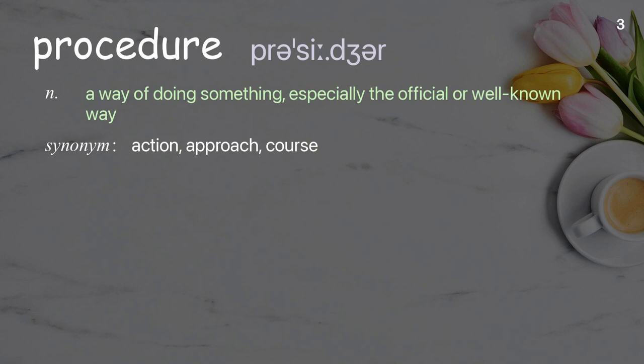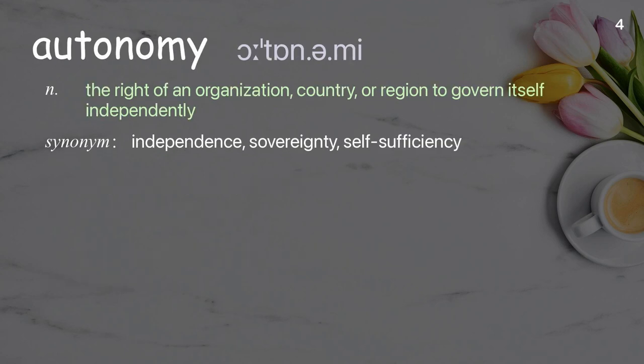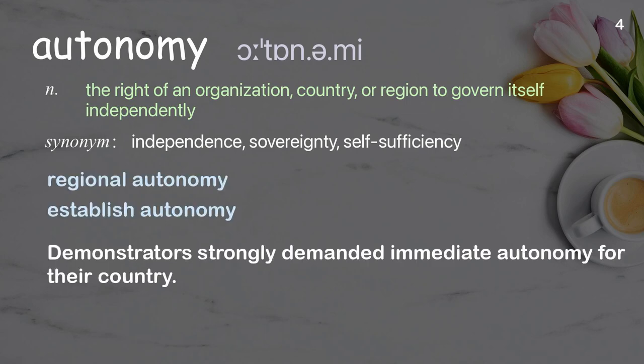Procedure: a way of doing something, especially the official or well-known way. Examples: undergo a surgical procedure; standard procedure; the pilot and flight attendant ran through the checkout procedure.